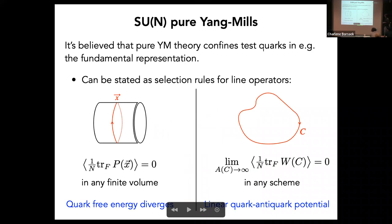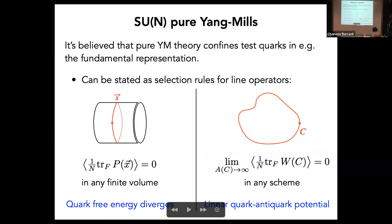It's about symmetries and confinement, and I think SU(N) pure Yang-Mills theory is the quintessential example where there is this concrete connection, which is very well understood. We all believe that pure Yang-Mills theory confines fundamental test quarks, and this is often stated as selection rules for certain line operators. We can compute the Polyakov loop expectation value, which will vanish in any finite volume. There's a similar selection rule for contractible Wilson loops: in the infinite area limit, these Wilson loop expectation values should vanish. More familiarly, we just have an area law for the Wilson loop, interpreted as saying the free energy of an isolated quark is infinite, or that there's a linear asymptotic quark-antiquark potential.